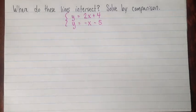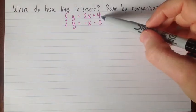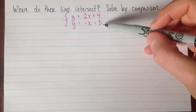Okay, so here's an example. The question asks us where do these lines intersect, and then it specifies that we should solve by comparison. So our two lines are y equals 2x plus 4 and y equals negative x minus 5.